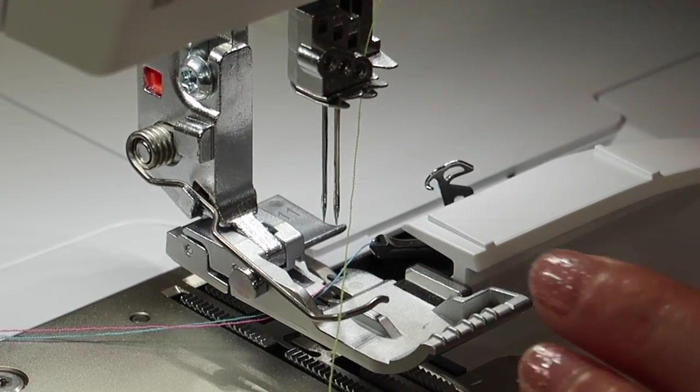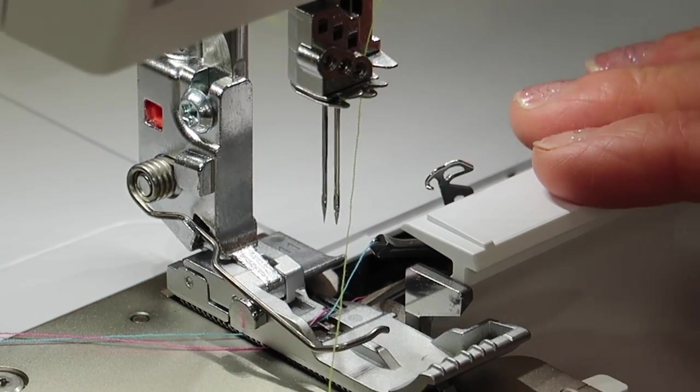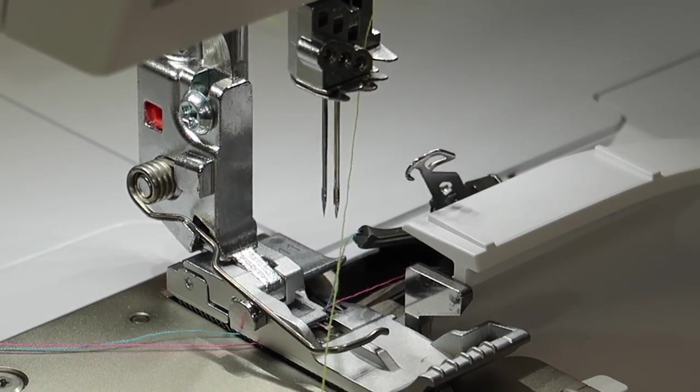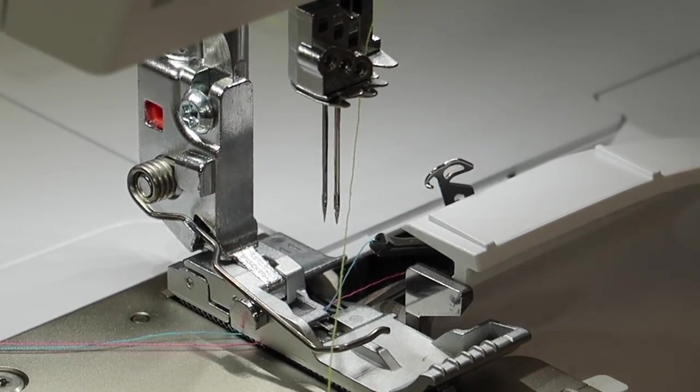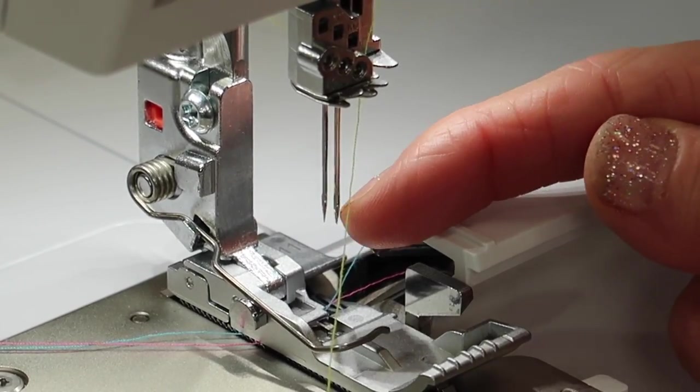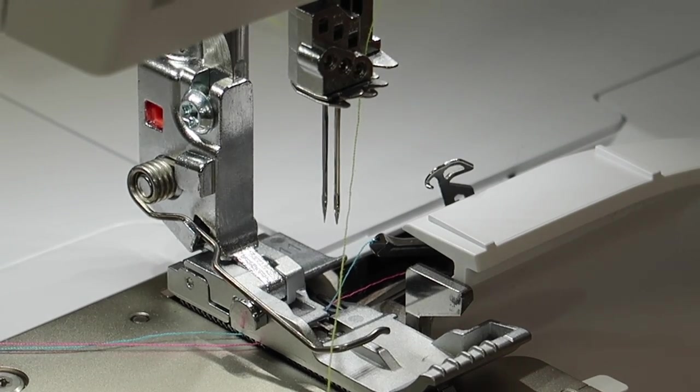If you have a serger with your presser foot up, you can always lower it for a little extra room. I've also removed the upper looper by twisting the hand wheel and moving it out of the way. So if it's in your line of sight, you can slide it to the side a little bit.